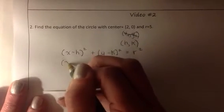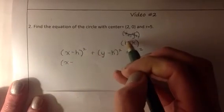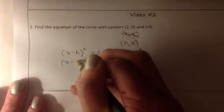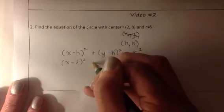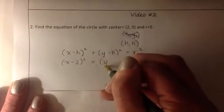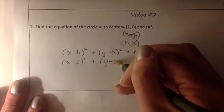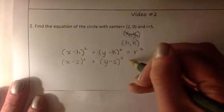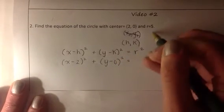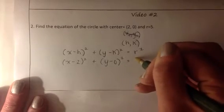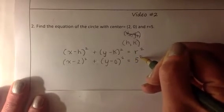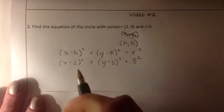So we have (x - h), which is 2, squared plus (y - k), which is 0, squared equals the radius, which is 5, squared. Then we'll simply simplify from here.